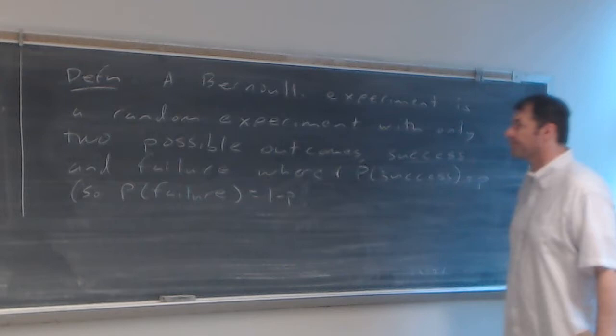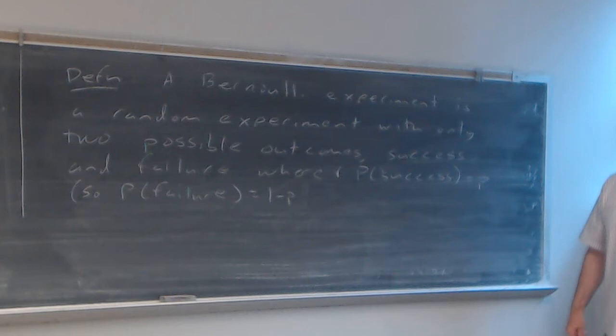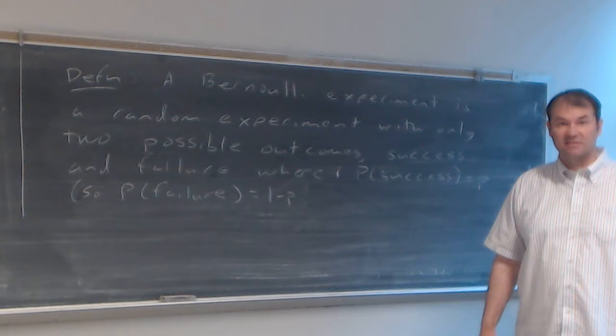Lots of things could be a Bernoulli experiment. One easy example is where you flip a coin, and you say: if I get heads, we count that as a success; if I get tails, we count that as a failure. The probability of success is a variable p.